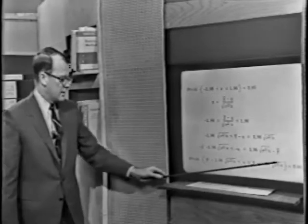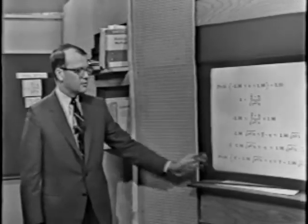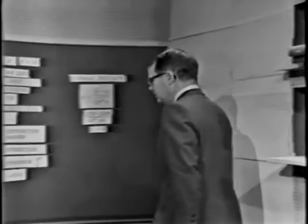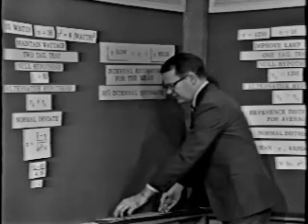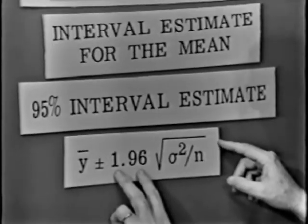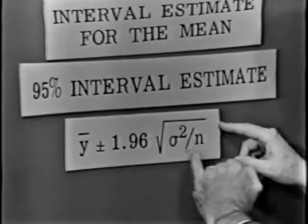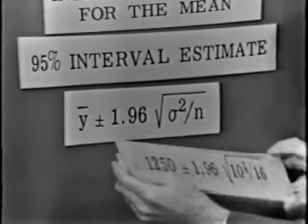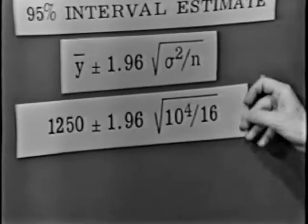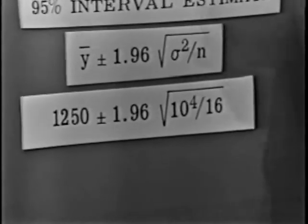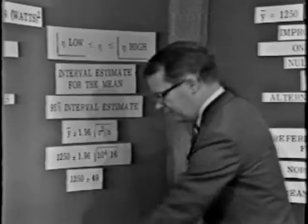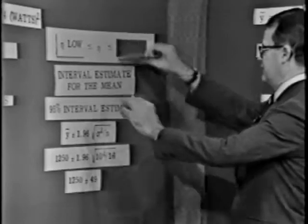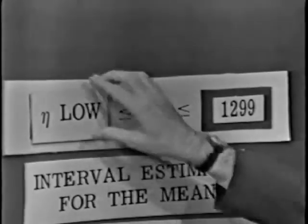The 95% confidence limits for eta are given by y-bar plus or minus 1.96 times the square root of sigma squared over n. We're making a 95% interval statement for the mean — 1.96 is the critical value of z leaving 2.5% in both tails of the curve. Plugging in our data: 1,250 plus or minus 1.96 times the square root of 10,000 divided by 16, which comes out to 1,250 plus or minus 49. On the high side we get 1,299, and on the low side, 1,201.